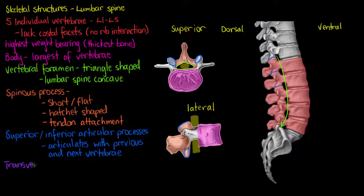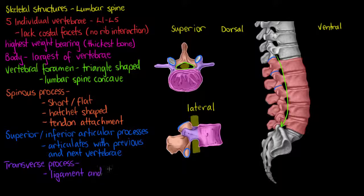One of the last features we'll see on our lumbar spine is the transverse process. The transverse process we can see sticking out laterally here in purple, and it's going to be a point of ligament and tendon attachment. We have these sticking out on each of our lumbar vertebrae so that we can attach tendon and ligament.